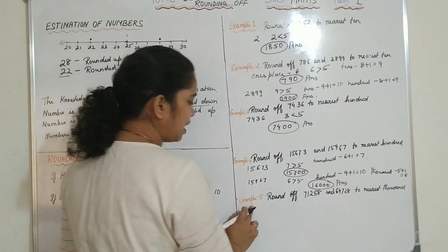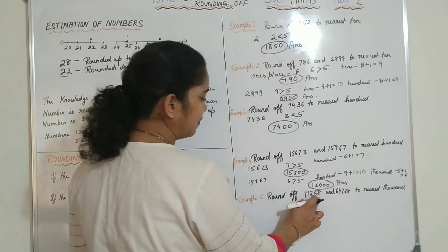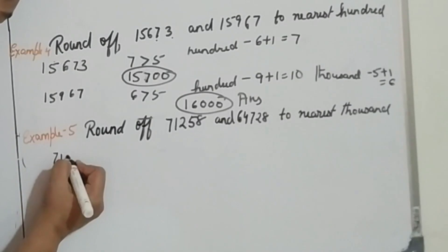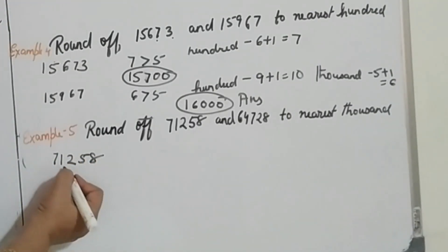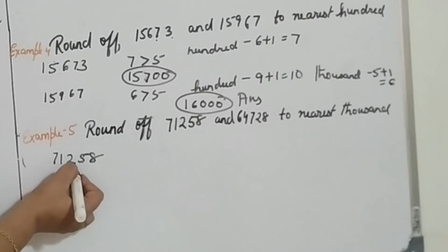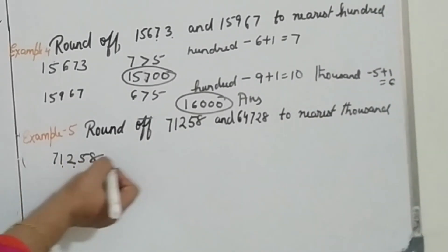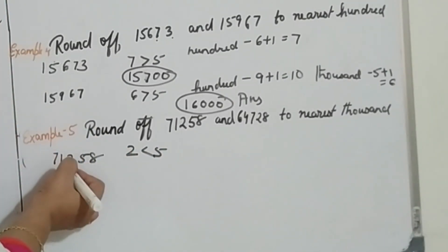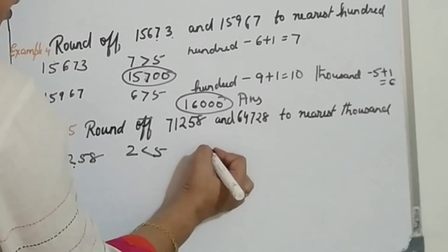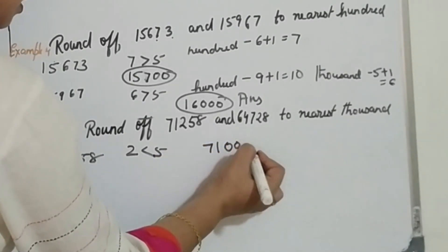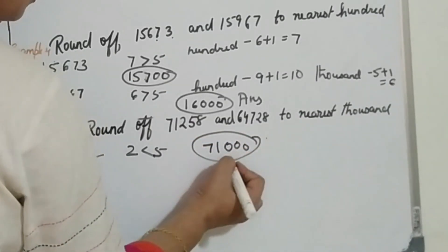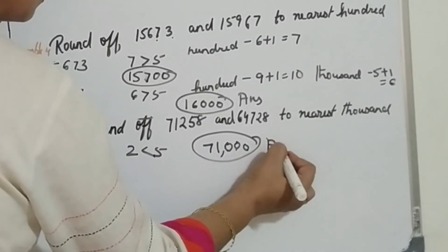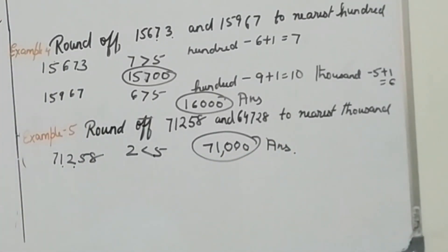Now the 5th example: round off the numbers 71258 and 64728 to the nearest 1000. We have to see the number in the 100s place to change the 1000s place. The digit in the 100s place of 71258 is 2, and 2 is less than 5. So the number in the 1000s place remains unchanged and the 100s, 10s, and 1s places become 0. So the answer is 71000. It is rounded down.